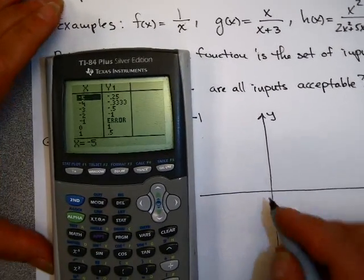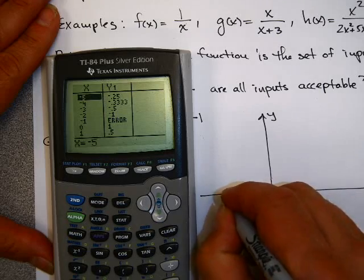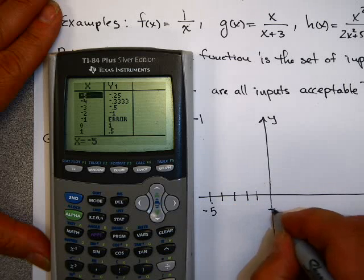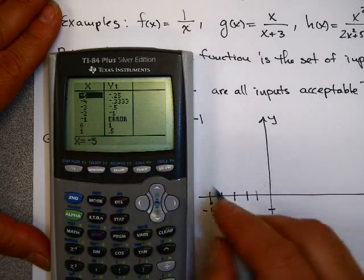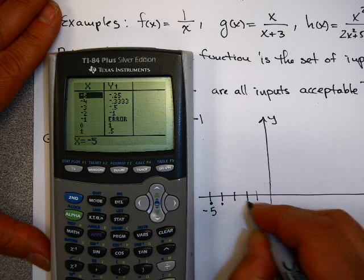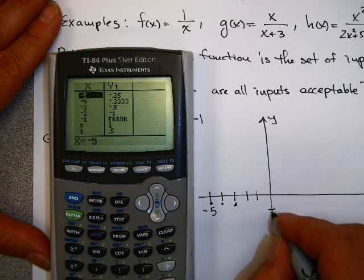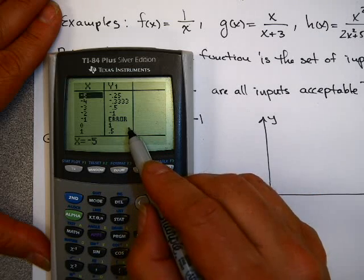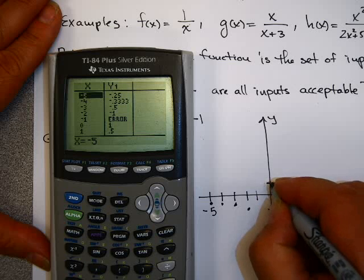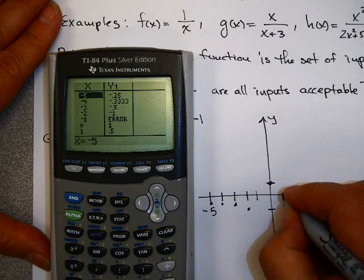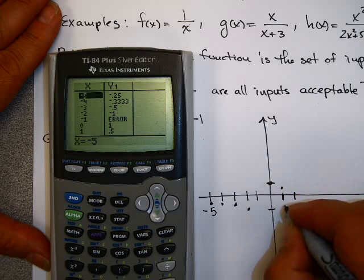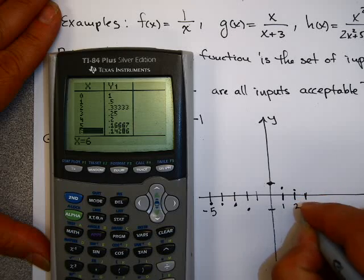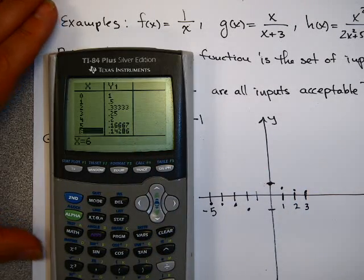When x equals negative 5, y equals minus 0.25. When x equals minus 4, y equals minus 0.333. When x equals minus 3, y is about negative one half. When x equals minus 2, y is negative 1. When x equals minus 1, I get an error. But when x equals 0, the answer is 1. When x equals 1, it's one half, and when x equals 2 it's one third, and at x equals 3 it's one sixth.